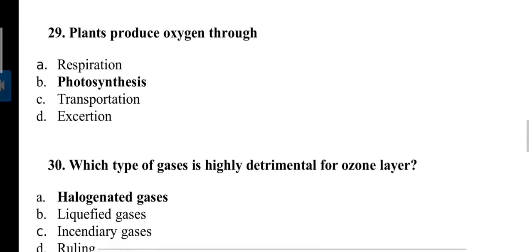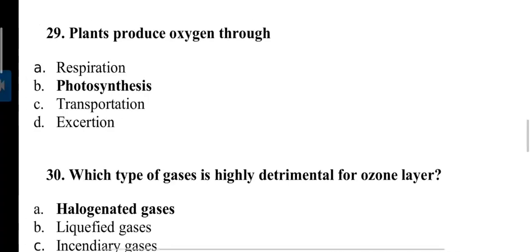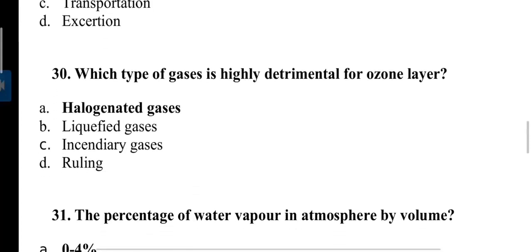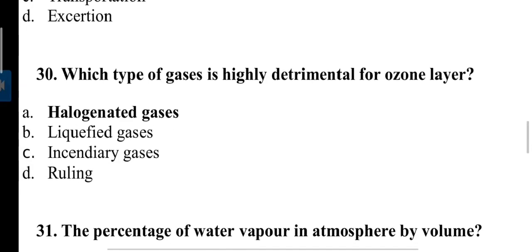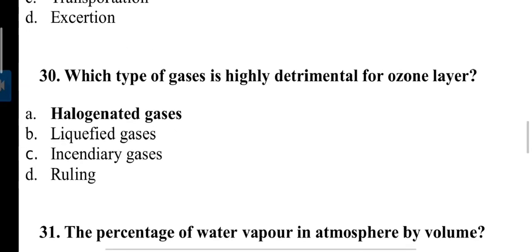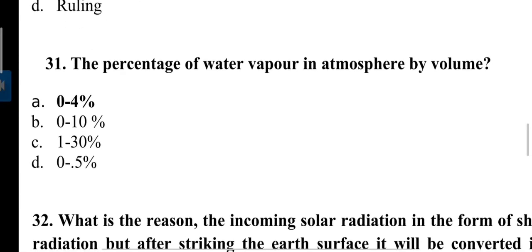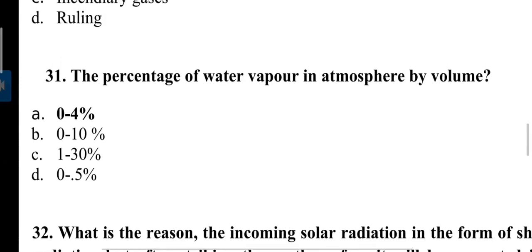Plants produce oxygen through which process? The answer is photosynthesis. In this process oxygen is produced from carbon dioxide and water. Next question: Which type of gases is highly detrimental for ozone layer? These gases are halogenated gases. Examples are chlorofluorocarbon, HCFC, HFC, etc.